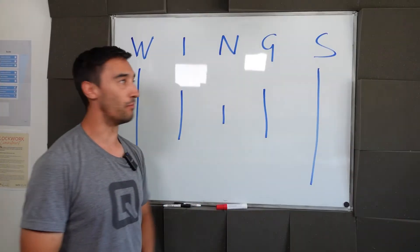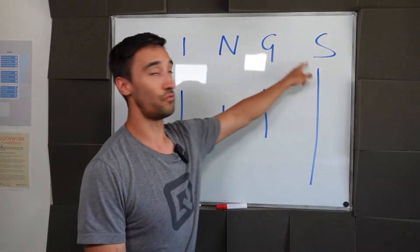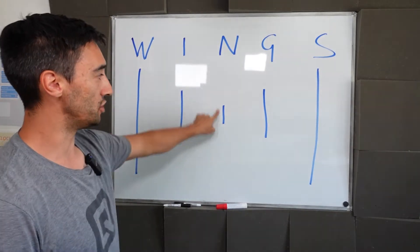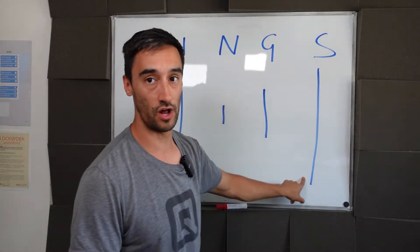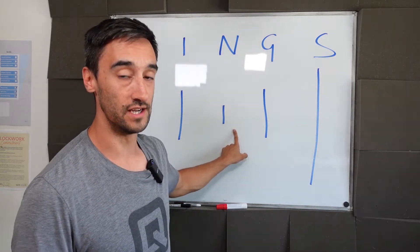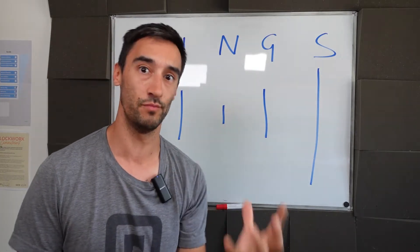As you can see on my whiteboard behind me here, I've got the word WINGS written out along the top, and I've got five lines. I've got a long line, a medium line, a short line, a medium line, a long line. So we've got two long lines, two medium lines, and a short line. And you can follow along with this video to find the perfect niche for your business.